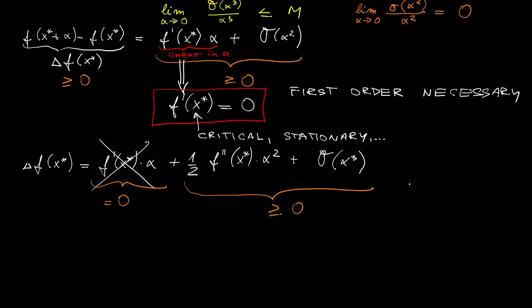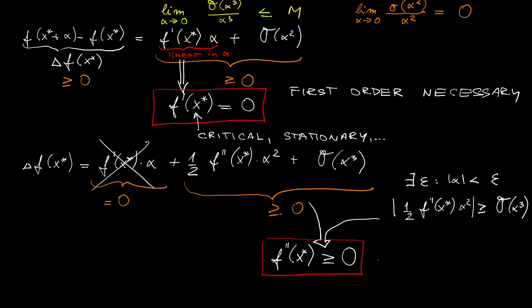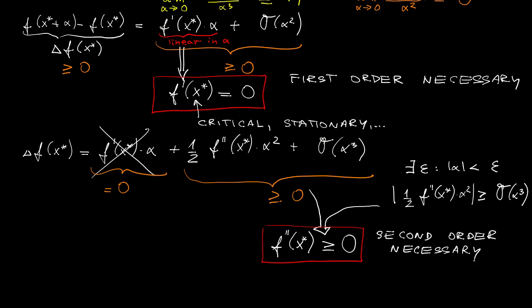But then, even though for a given alpha the higher order terms can be larger in absolute value than the second order terms, we can argue that for sufficiently small alpha, if we go towards 0, sooner or later the second order term will dominate all the higher order terms. But then it follows that it's the second order term that necessarily must be non-negative. And since the squared alpha is always non-negative, it follows that it's the second derivative of f that must be non-negative. So this way we derived the second order necessary condition.